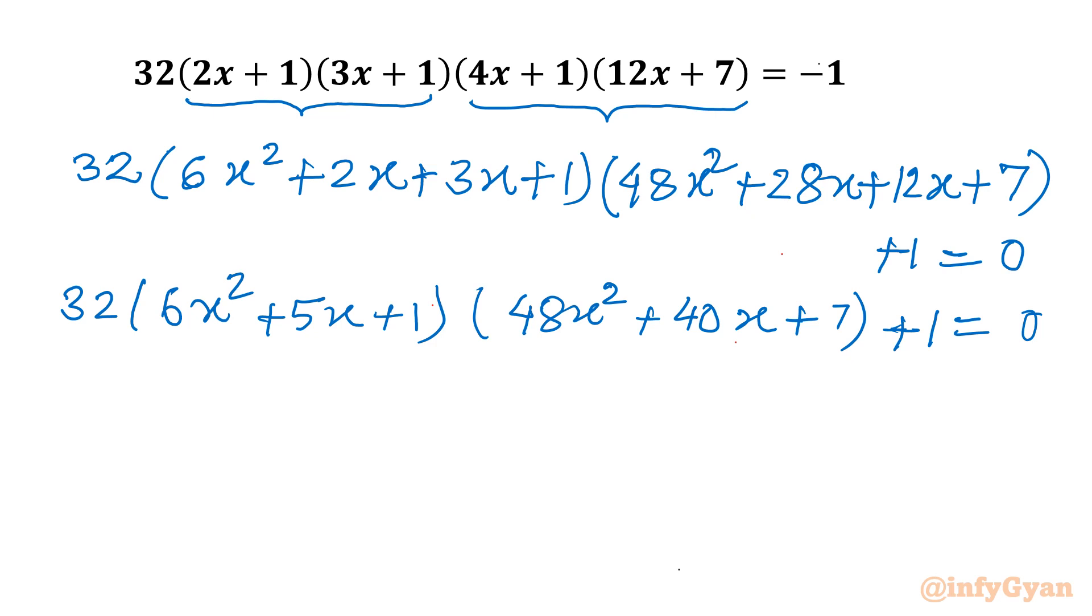Now I will split this bracket. It would be equal to 32 times in bracket (6x squared plus 5x plus 1). And here I will be writing 48x squared plus 40x plus 8 minus 1. And this 1 is as it is, equal to 0.